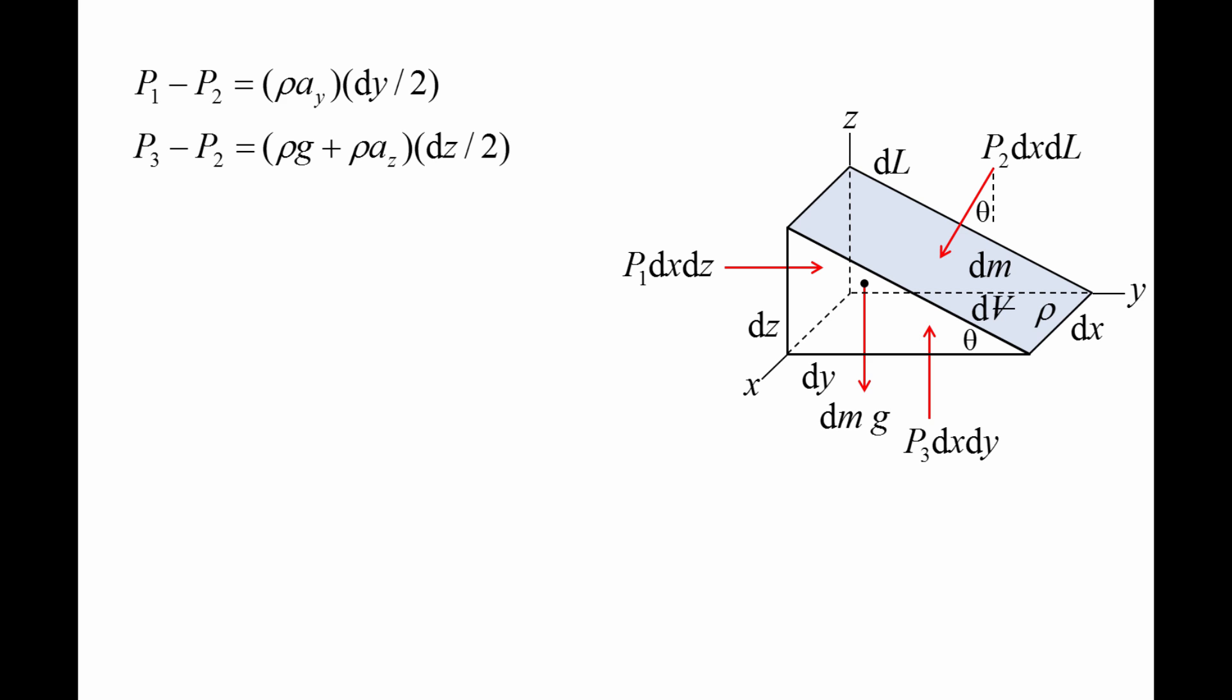We will put the two equations of motion on the top of the screen and re-show the prism. In the limit as dx, dy, and dz go to zero, the prism becomes an infinitely small point in space, and the right side of the equations disappear.